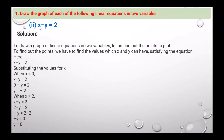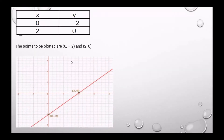Next, for the equation x minus y equals to 2, we find the points to plot by substituting values of x. If we put x equals 0, then y is minus 2. If we put x equals 2, then y is 0. So the plotted points are (0, -2) and (2, 0), and this is the graph.